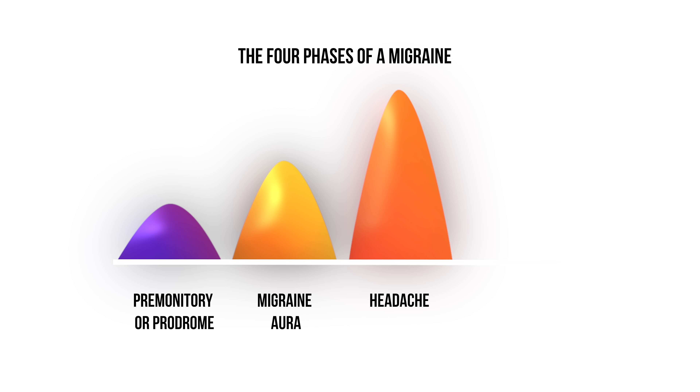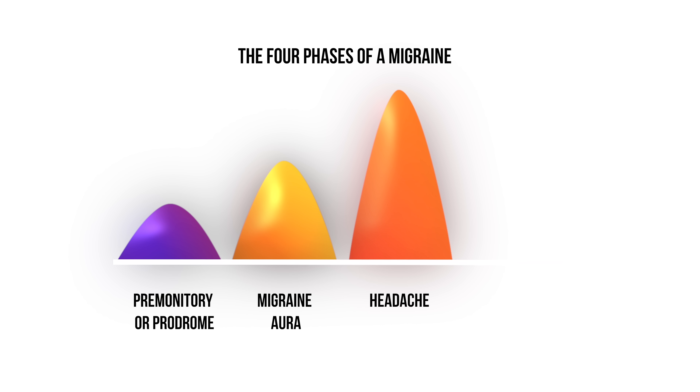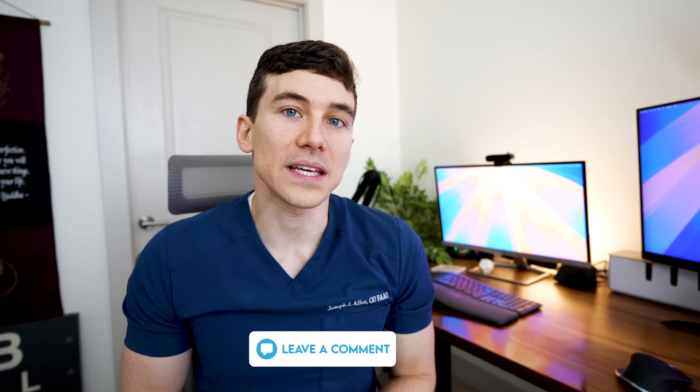Usually the aura phase is followed by the third phase, the headache phase, where you get an intense pounding headache and become more sensitive to light and sound — which is why you'll often find me hiding in a dark room. It is possible to experience the visual phenomena or sensory abnormalities without ever getting the headache. Some people also experience the fourth phase, the post-drome phase, sometimes called a migraine hangover, where they feel nauseated, fatigued, and even confused. All these symptoms can really knock someone out for at least a few hours, if not an entire day.